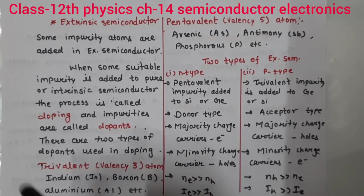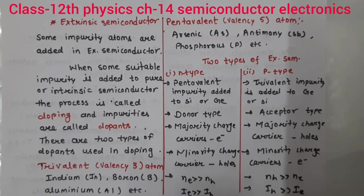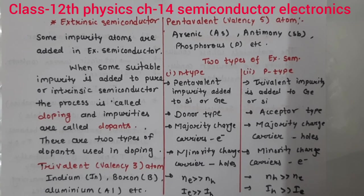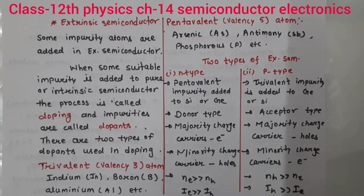Pentavalent impurity add karne ke baad aapka jo semiconductor hoga woh donor hai — kyunki pentavalent mein five atoms hote hain. Yeh five atoms apne around four atoms se covalent bond banata hai, aur yahan four atoms hain around. Pentavalent mein five hoga to ek extra hai, to us extra atom ko donate kar dete hain. Aapke paas four-four atoms ke covalent bonds mil jate hain. Majority charge carriers yahan electrons hote hain, aur minority mein holes honge. NE is greater than NH — number of electrons is greater than number of holes. So current bhi electron ke through zyada milegi — current through electrons is greater than current through holes. This is n-type semiconductor.